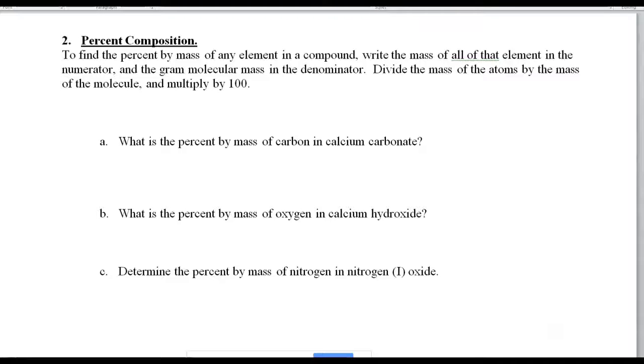Our second type of problem is percent composition by mass. This is the one we worked on earlier this week. What we need to do is we need to figure out the mass of the element we're looking for and then divide it by the mass of the total. So when I say what is the percent by mass of carbon in calcium carbonate, well, of course, the first thing you have to do is figure out what calcium carbonate is.